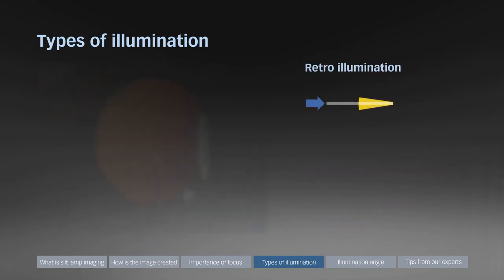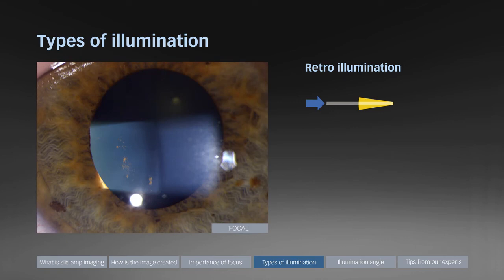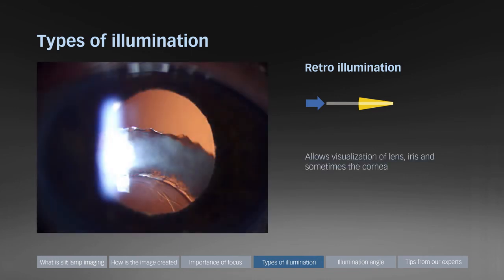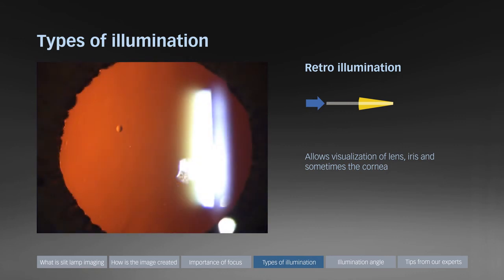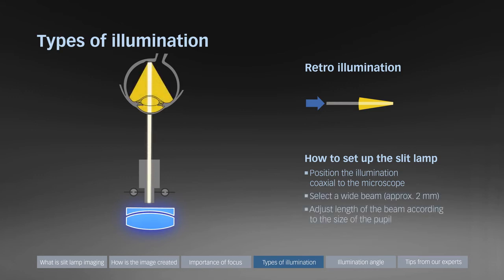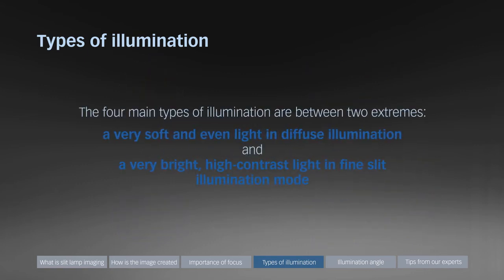Retro illumination uses light reflected from the retina coming towards the microscope. This can allow excellent visualization of pathologies that occur in the lens, the iris, and sometimes the cornea. To set up the slit lamp for retro illumination, position the illumination tower coaxial to the microscope, select a moderate beam width of between 1 and 2 mm, and adjust the length of the beam according to the size of the pupil. De-centering the slit beam towards the pupil margin optimizes the illumination and removes unwanted reflections from the center of the image. The four main types of illumination range between two extremes: a very soft and even light in diffuse illumination and a very bright high contrast light in fine slit illumination mode.